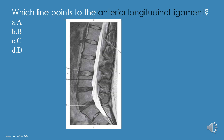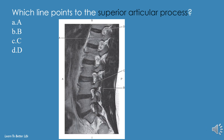Which line points to the anterior longitudinal ligament? A, B, C, or D? The answer is C. Which line points to the superior articular process? A, B, C, or D? The answer is C.